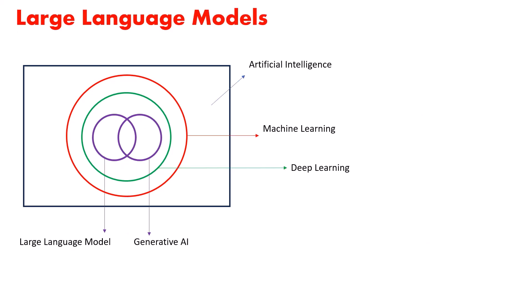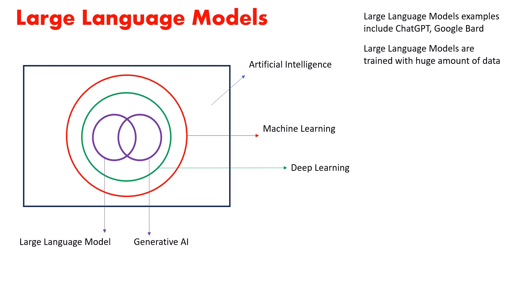Let's explore large language models. Examples include ChatGPT and Google Bard. We call them large language models because they are trained on a huge amount of data and due to the complexity of their neural networks. Large language models are trained on a huge amount of unstructured, unlabeled data.